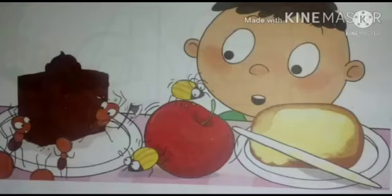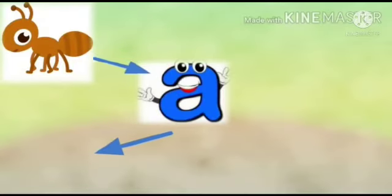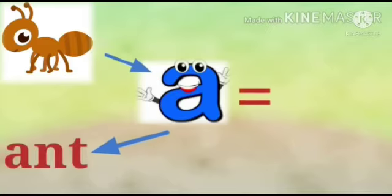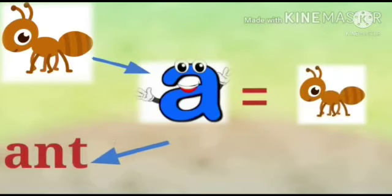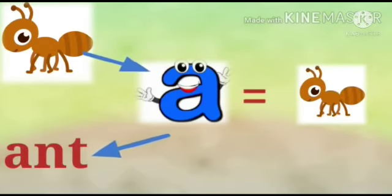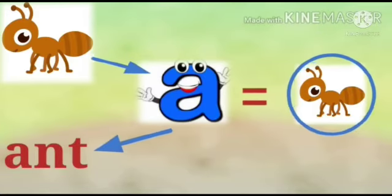Let's see in this picture. Some words start with A. The spelling of 'ant' is A-N-T. The word 'ant' starts with A, that's why we circle the ant.